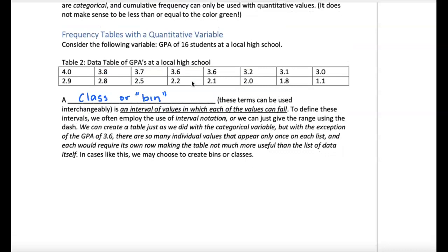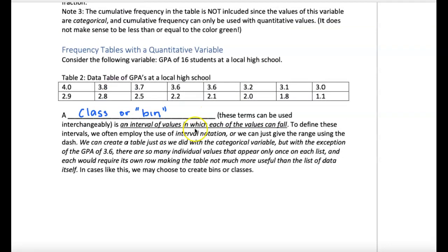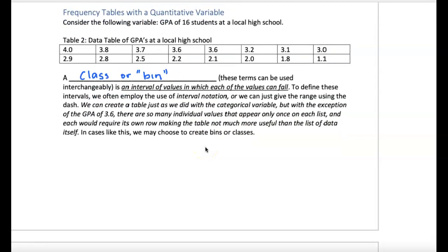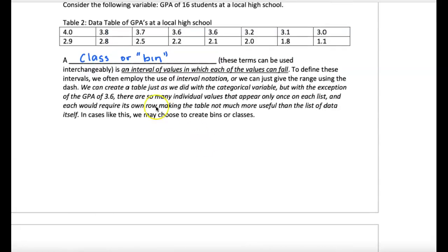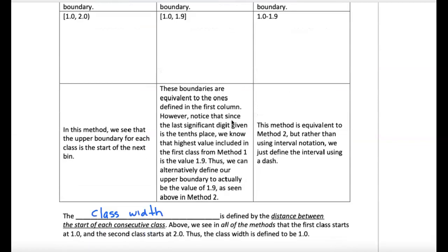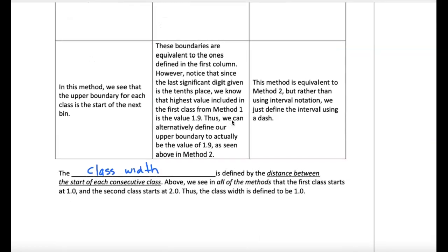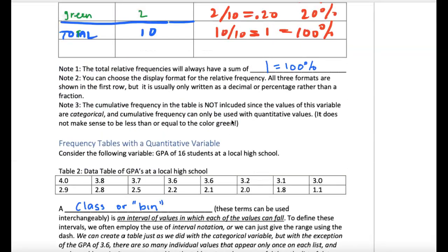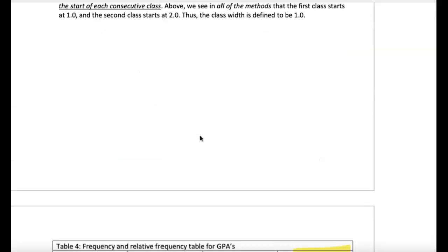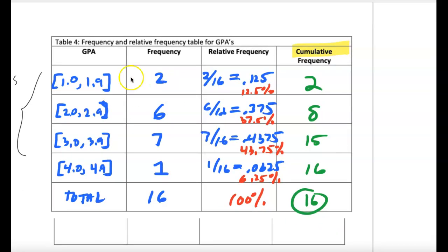What we do for a quantitative variable - we create, not categories because these are numbers, we call them classes or bins. We create a set of values to say how many fit into this group, how many fit into this group. So we call those classes or bins when we talk about a quantitative variable. Let's take a look at what that would look like. If you had this set of data, this is what it would look like here.